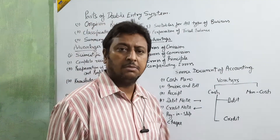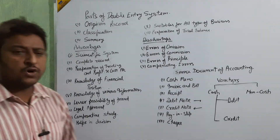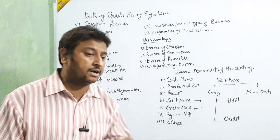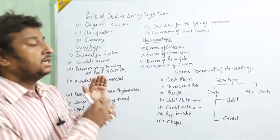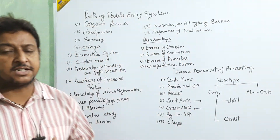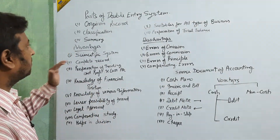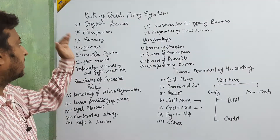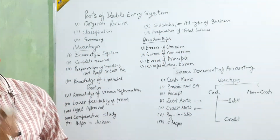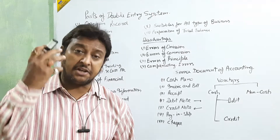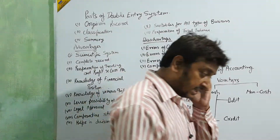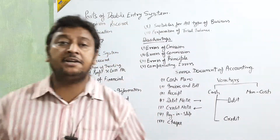The first part of the double entry system is the original record. In this system, we first enter all transactions in different types of books — such as the general cash book, purchase book, sales book, sales return, purchase return. In these books we make the record, and this is called the original record, where we present transactions in the form of an entry.